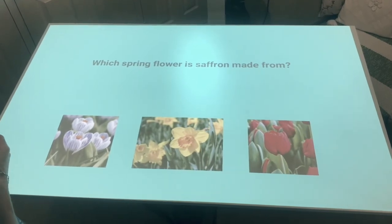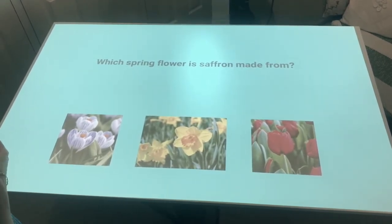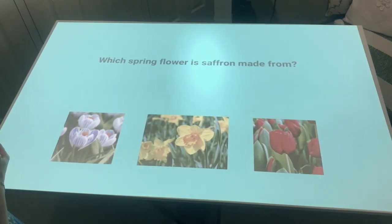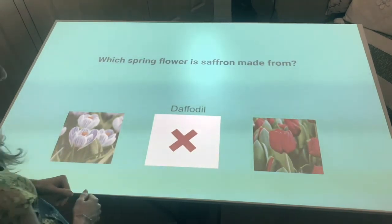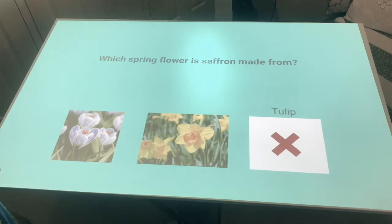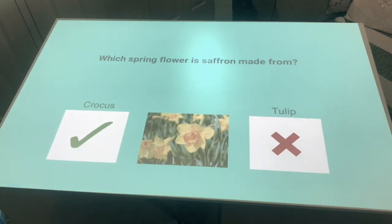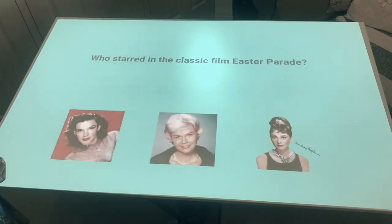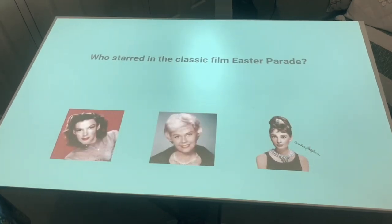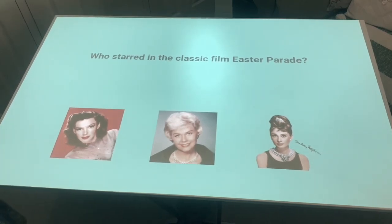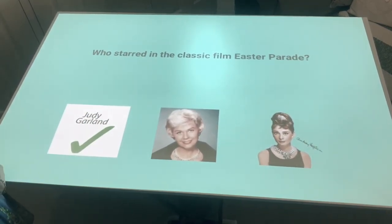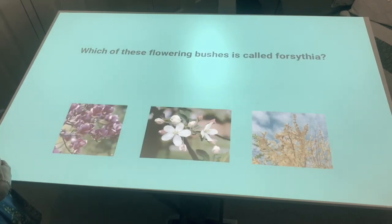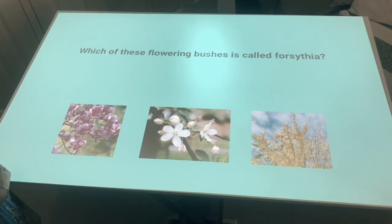Here we have an example of one of our quiz applications — this is Spring Quiz. We have three possible answers along the bottom and a question along the top. This one asks: which spring flower is saffron made from? I'm going to start by trying daffodil — that's not correct. Tulip — no. But crocus is correct, and it then moves you on to the next question. Now we are asked who starred in the classic film Easter Parade — she's actually singing along in the background. It's Judy Garland.